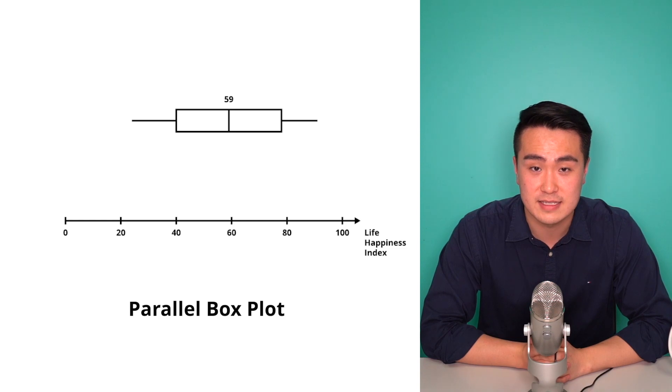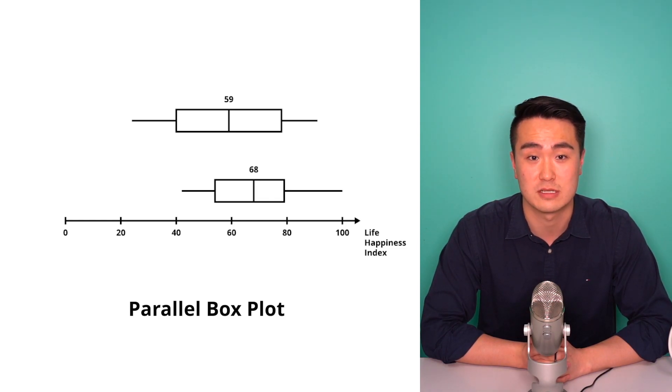Now, a parallel box plot, as fancy as it sounds, is just two box and whisker plots stacked on top of each other to compare the underlying distributions.